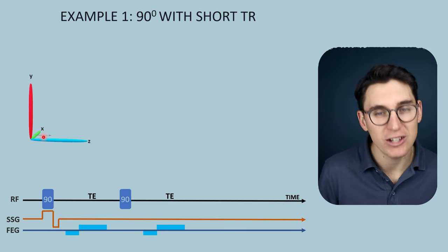The key take-home point: differing flip angles give differing signals, and using maximum flip angles in a short TR sequence is not always beneficial. Smaller angles can give better signal because the short TR doesn't allow larger flip angles to fully regain their longitudinal magnetization before being flipped again, which is responsible for the decreased signal.